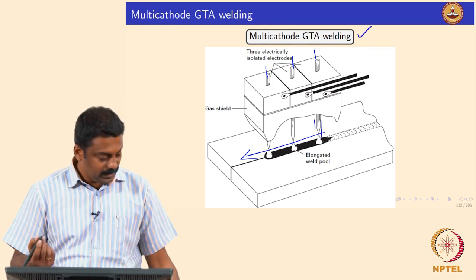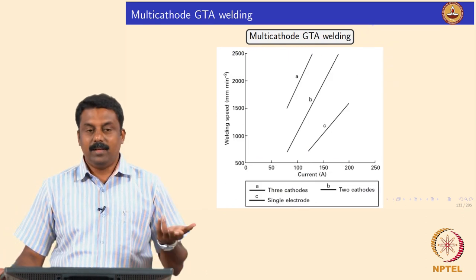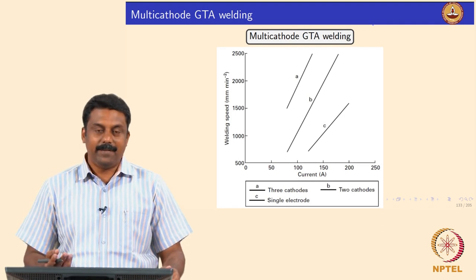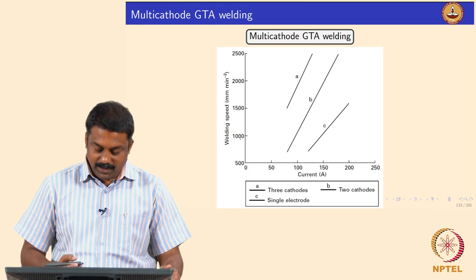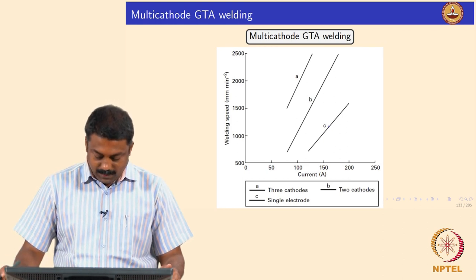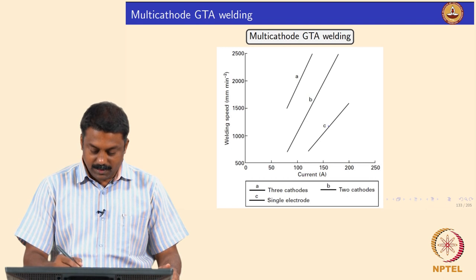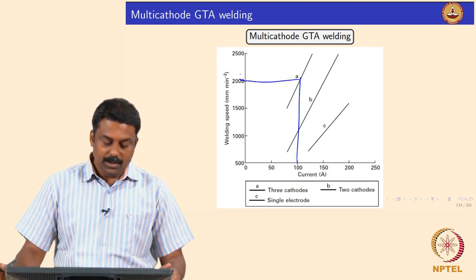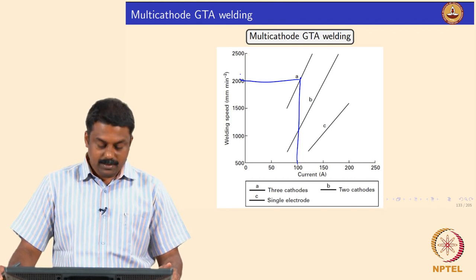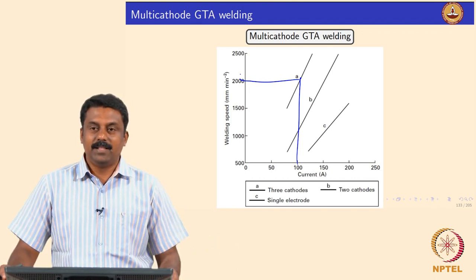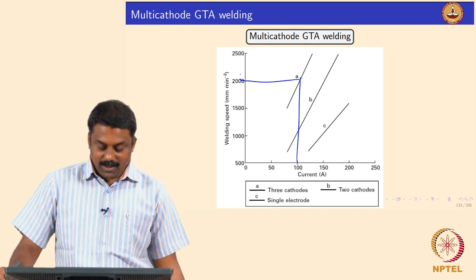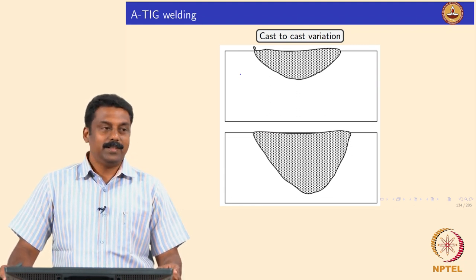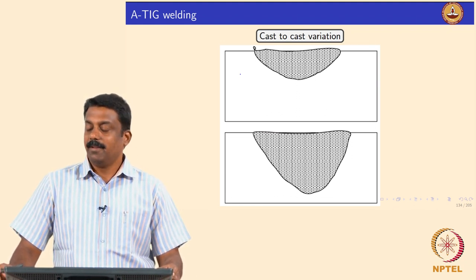Multi-cathode welding increases productivity significantly — obviously you melt more. This graph I borrowed is very obvious. You can increase the welding speed tremendously by using a multi-cathode; for example, case A uses three electrodes with significantly lower current and you can weld at much higher velocities, because you have more electrodes. Another development very commonly used in steel plants at industrial scale is known as A-TIG.